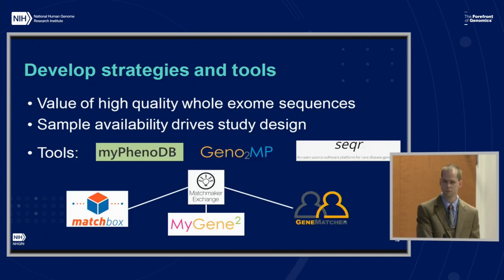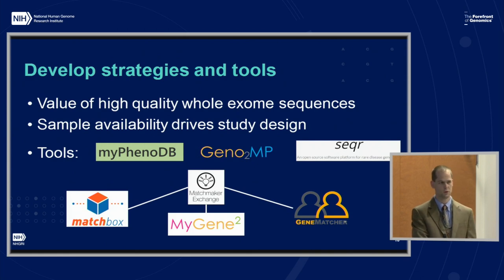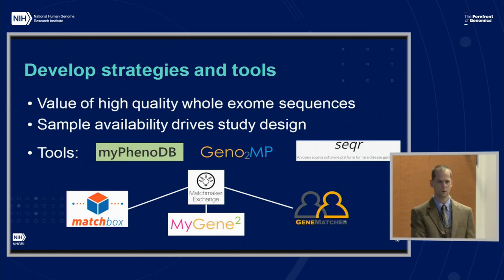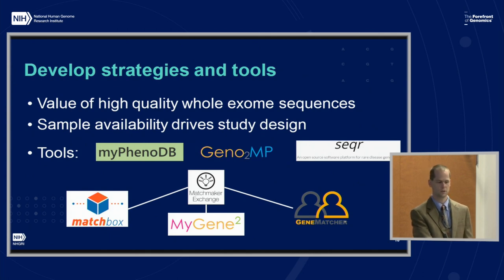The second major goal is developing strategies and tools. One strategic point is the value of high-quality whole exome sequence for Mendelian discovery — this is still less expensive than whole genome. The CMGs have a number of strategies for doing analysis depending on sample availability, recognizing that you can still do discovery even with a single case, though trios or larger numbers of cases are preferable. A number of tools come out of the CMG, and notably three of the Matchmaker Exchange nodes — Matchbox, MyGene2, and GeneMatcher — are all directly associated with CMGs.